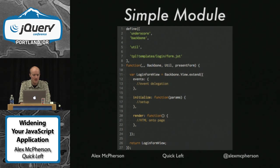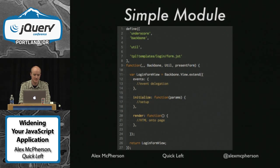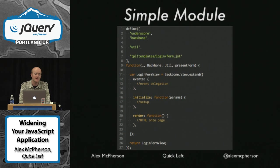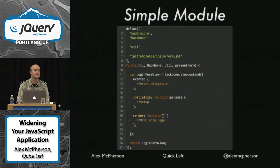Here's an example of a simple module. At the top there's a call to a function called define, and then there's an array of file names: underscore, backbone, something called util, and something called a template. Then on line nine there's a function taking four arguments — the result of including those files gets passed to this function.